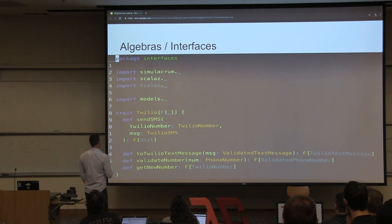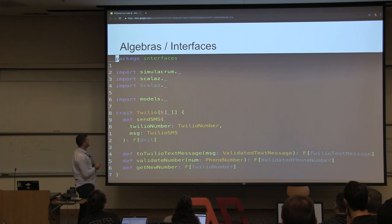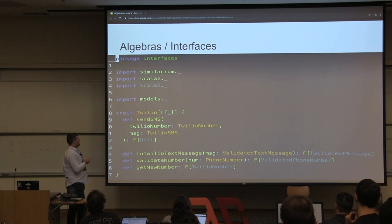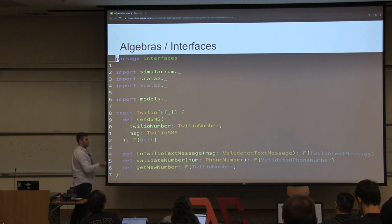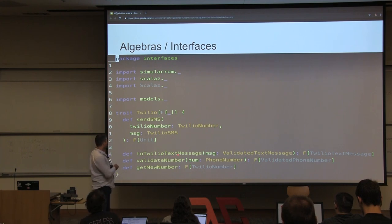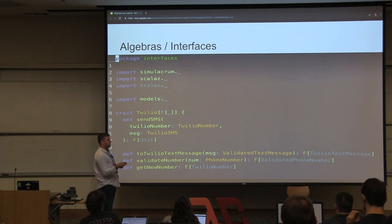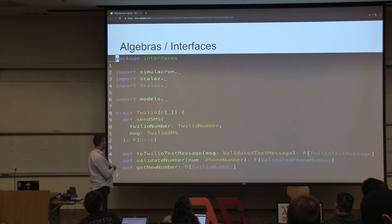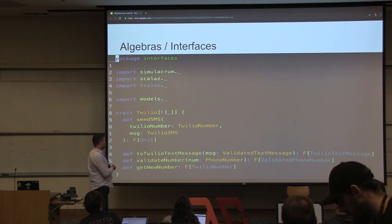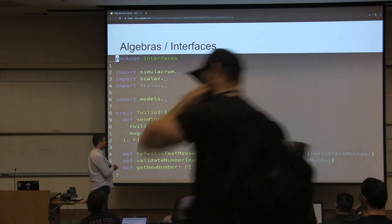Our second trait is going to be called Twilio — this is for talking to the actual real Twilio service. Again we've abstracted over the effect with this F. We're going to have sendSMS, which takes a Twilio number and a Twilio SMS and just sends it, returning unit because it's a fire-and-forget operation. We also have some helper methods: toTwilioMessage takes a validated text message and turns it into something Twilio understands, we validate phone numbers using Twilio, and we can buy a number from Twilio.